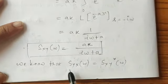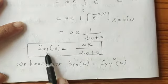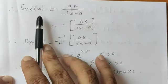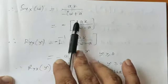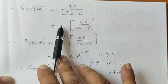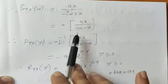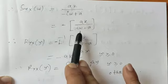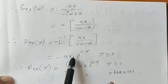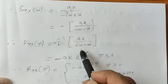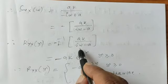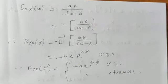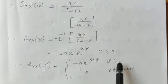We also know that Syx(omega) is the complex conjugate of Sxy(omega). So Syx(omega) = complex conjugate of A·k / (i·omega + A), which gives A·k / (minus i·omega + A). For Ryx of tau, we take the inverse Laplace transform of this expression. That equals minus A·k times the inverse Laplace transform of 1/(i·omega minus A), which gives Ryx(tau) = minus A·k · e^(A·tau) for tau ≥ 0, and 0 otherwise.